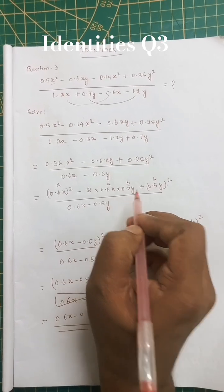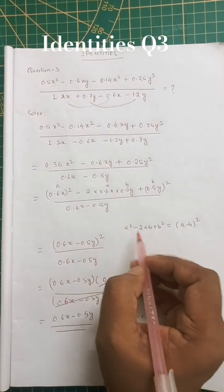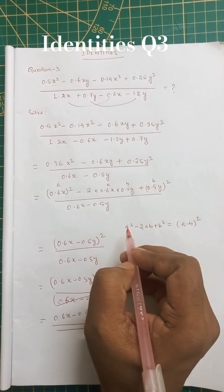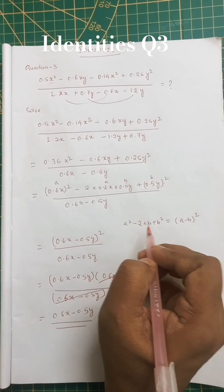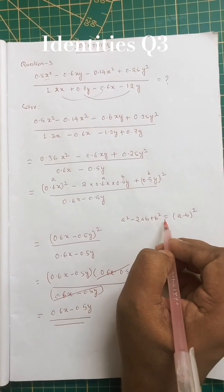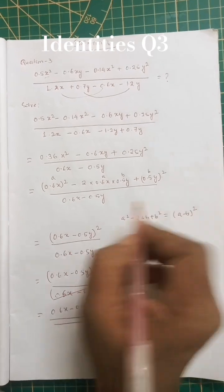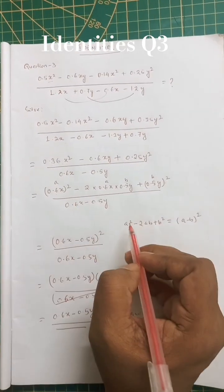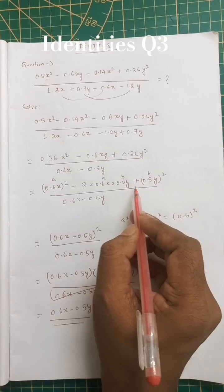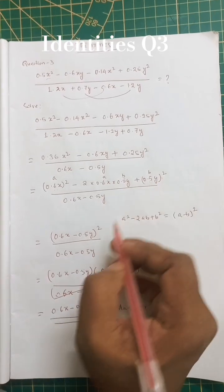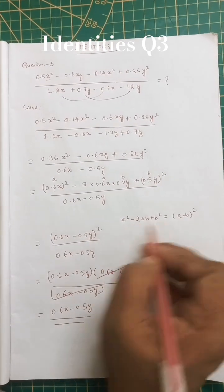Now we can use the formula a squared minus 2ab plus b squared equals a minus b whole squared. What is a? a is 0.6 x. b is 0.5 y. So as per this formula,